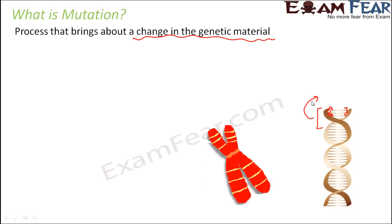For example, suppose a particular sequence of bases gives instruction to synthesize a protein that determines the color of your eye. Similarly, another portion of DNA gives instructions for a protein that decides your hair color. If there occurs some change in the structure of the chromosome itself, this will impact the hair color by impacting the synthesis of that protein. This is how a change in genetic material brings about changes in traits.